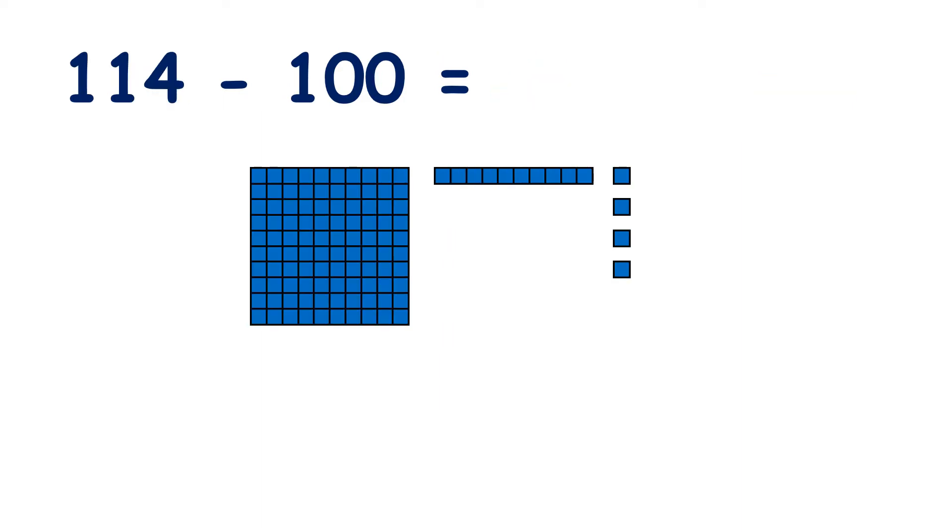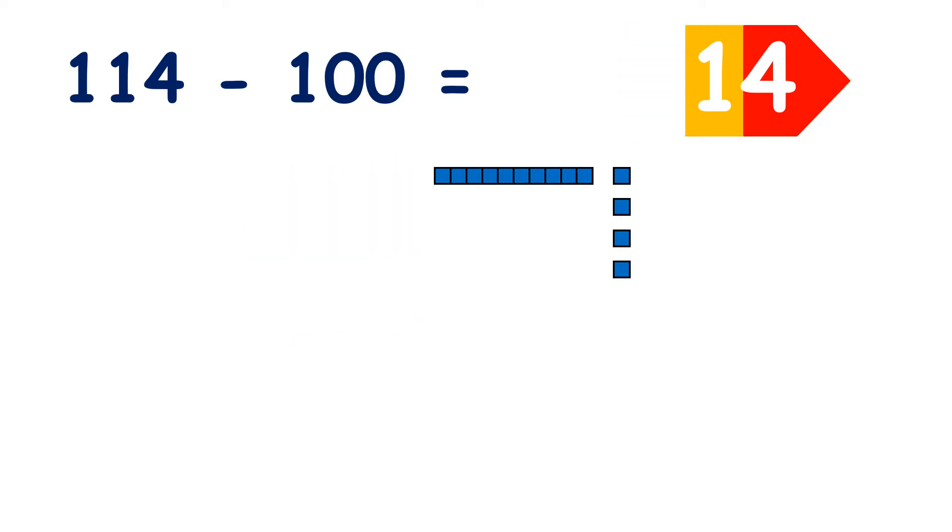Here we have 114, 100, 1 ten and 4 units. So what will we have left if we take away our 100? If we take away 100, now we only have 1 ten and 4 units, so we have 14.